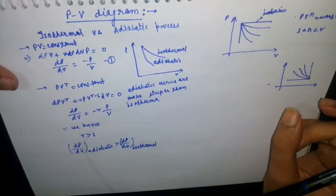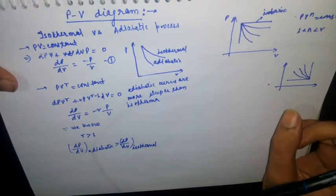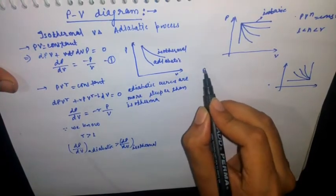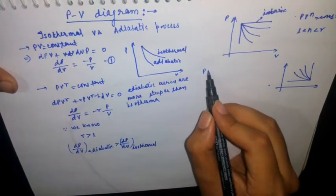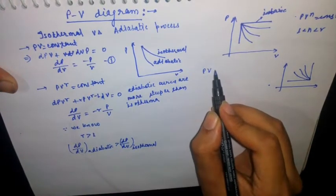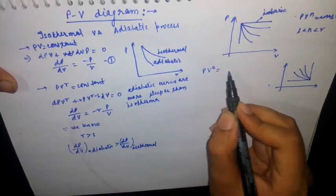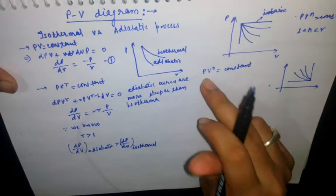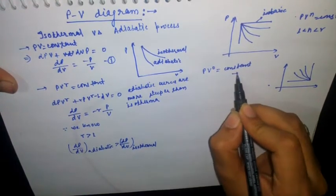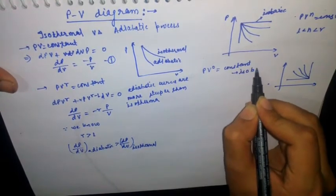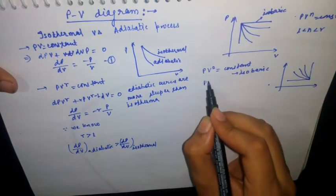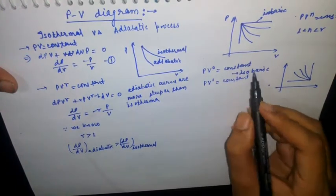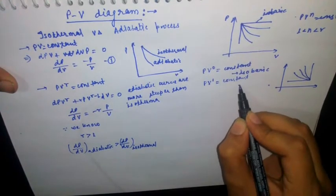To remember and draw efficiently in exams, there is a trick. The isobaric process can be written as PV^0 = constant. PV^1 = constant is nothing but the isothermal process.